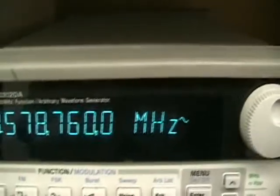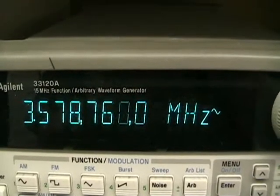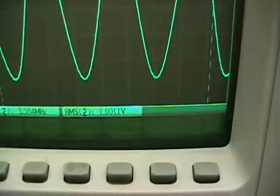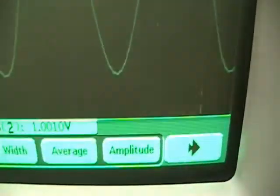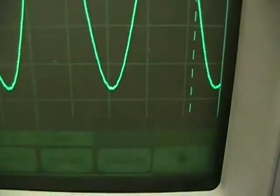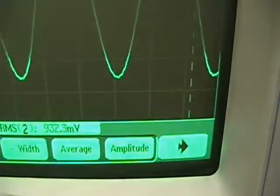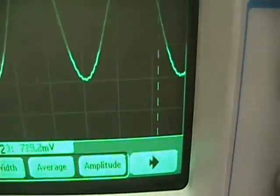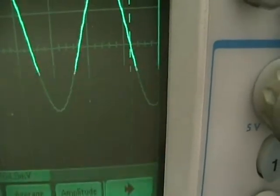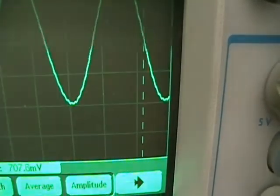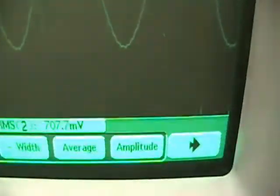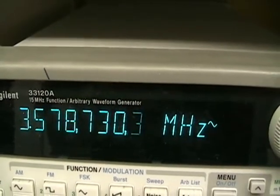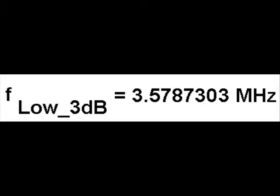On the generator, the resonant frequency is 3.578760 megahertz. On the scope, now I will adjust the resonant frequency until the response is 0.707. Notice that I'm making very small frequency changes, actually in the hertz, and I'm getting the changes, so the crystal is extremely high Q. I'm close there, just one click away. 0.707 or 707 millivolts, and the frequency is 3.578730 megahertz. So that is the lower frequency.